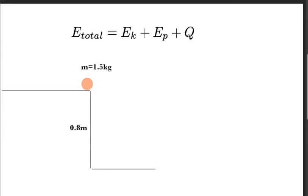Okay, so if we have this ball, 1.5 kilograms, and it's 0.8 meters above the ground, what we want to find is at some point when this ball falls somewhere in between, we have both kinetic and potential energy.